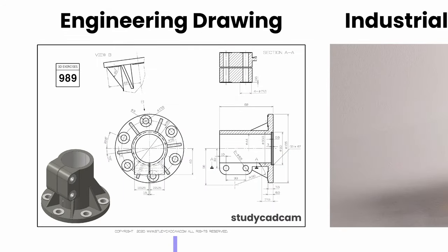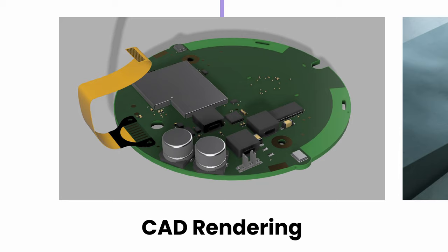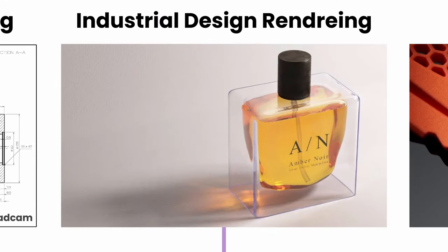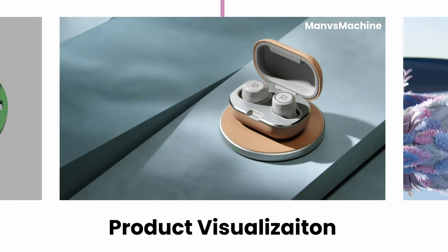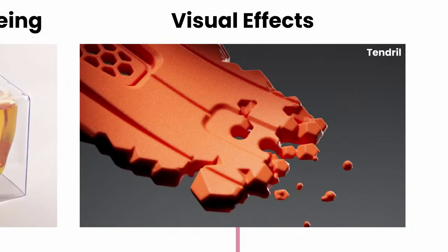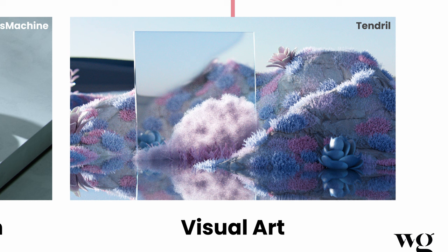Engineering drawings are for creating simple, accurate diagrams to help define the dimensions and form of an object to be manufactured. CAD rendering uses simple, colored shading with basic shadows and highlights to describe form and texture. Industrial design rendering relies on physically-based material appearances and light simulation to provide a reasonably realistic rendition of an object. Product visualization showcases photorealistic visuals of products in context or fully detailed environments, used in public-facing marketing collateral. Visual effects shows a product interacting with simulations or undergoing complex form transformations. And visual art demonstrates highly realistic visuals using heavy metaphor to tell the story of an object or a brand, playing out like a scene from a movie.